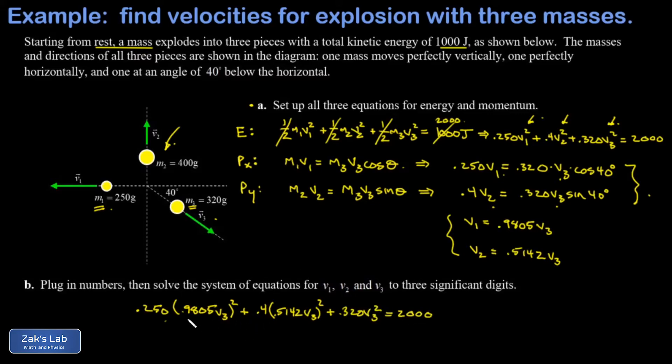So I'm going to factor v3 squared out of all three of these terms on the left and just gather everything else into a single constant. That's 0.250 times 0.9805 squared plus 0.4 times 0.5142 squared plus 0.320. And I get 0.6661 v3 squared equals 2,000. So we divide by that coefficient and take the square root. And to three sig figs, I get that v3 is 54.8 meters per second.